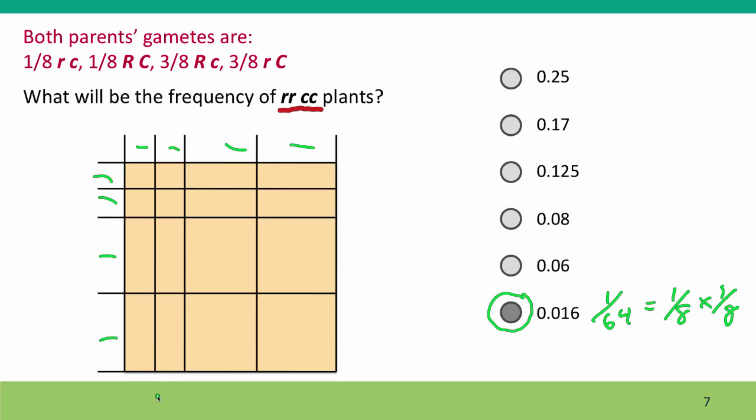The easy way to do this problem is to say, okay, we only care about the offspring that have little r from both parents and little c from both parents. Using our meeting square diagram, we can confidently say that the only square that we care about is the one where the little r little c gametes from one parent meet the little r little c gametes from the other parent.